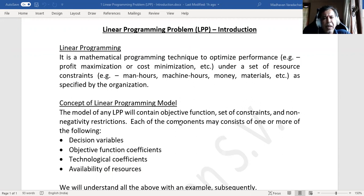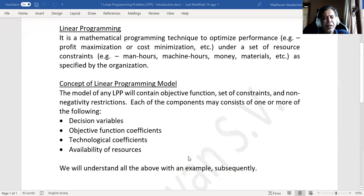Each of the components may consist of one or more of the following: one is called decision variables, then objective function coefficients, then technological coefficients, and then availability of resources.